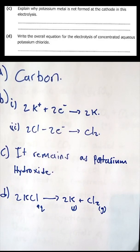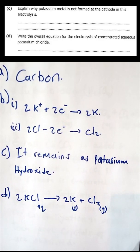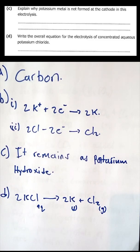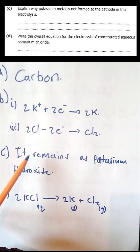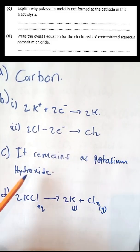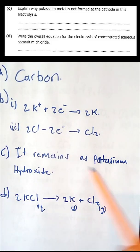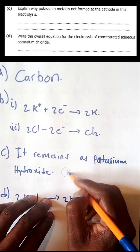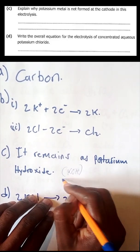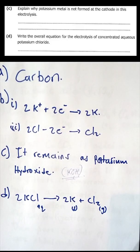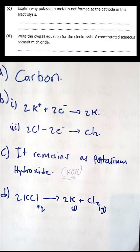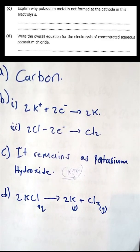Question c: explain why potassium metal is not formed at the cathode in this electrolysis. Because potassium metal in this electrolysis always remains as potassium hydroxide — it remains attached to hydroxide ions and does not form as potassium metal at the electrode.